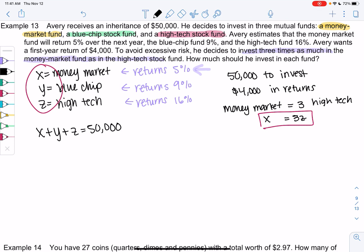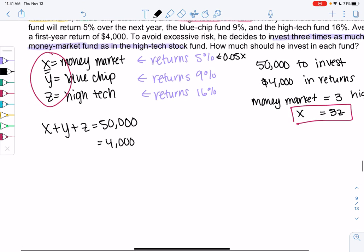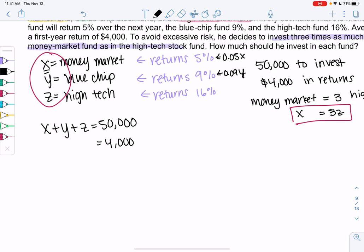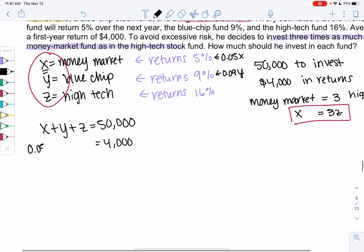And then, returns should be $4,000. So how do I figure out the returns? If we return 5%, that means it'll be 0.05 of X, the amount invested. If we return 9%, that'll be 0.09 of Y. So 0.05X plus 0.09Y, and then Z would be 0.16Z for 16%, equals 4,000.